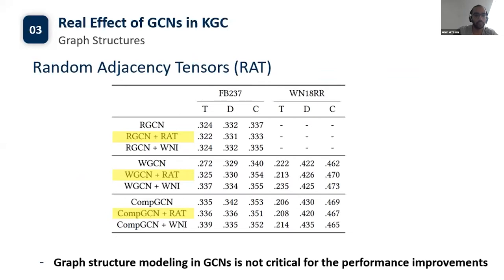GCNs are known to be effective in modeling graph structures. Therefore, if we break graph structures, the performance of GCN-based KGC models is expected to decrease significantly. Since graph structure information of a knowledge graph is represented by its adjacency tensor, we conduct experiments with randomly broken adjacency tensors to explore the effect of graph structures. Surprisingly, randomly breaking the graph structures does not affect the overall performance of GCN-based KGC models on both datasets. The models with random adjacency tensors attain comparative performance to their normal adjacency tensor counterparts, demonstrating that graph structure modeling in GCNs is not critical for performance improvements.